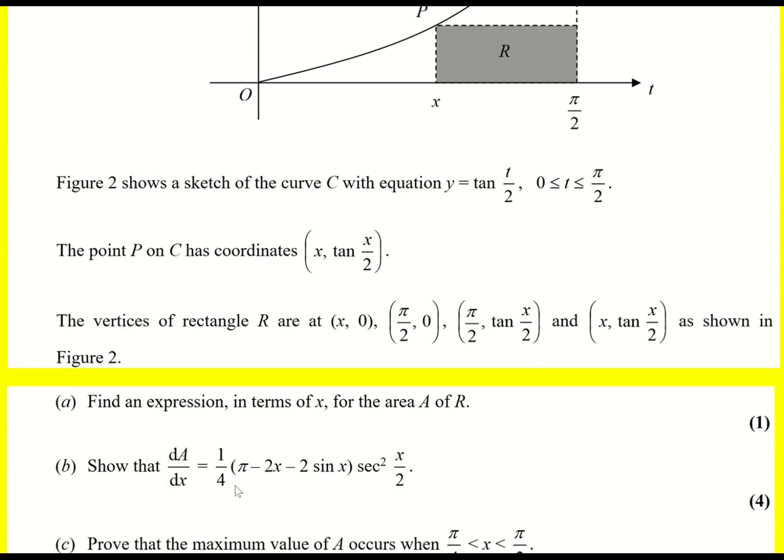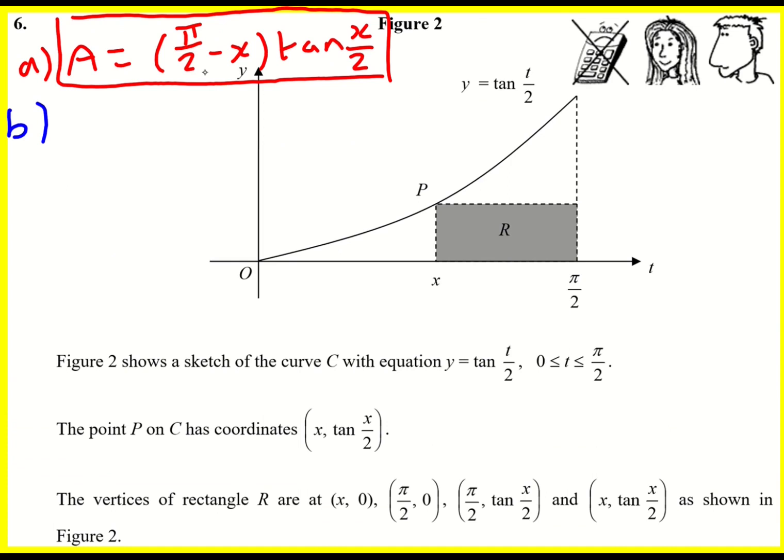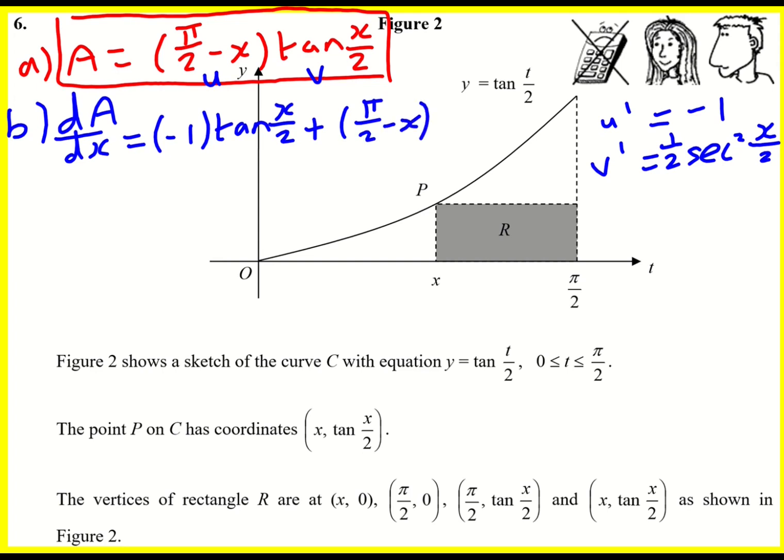In part B, we're asked to differentiate, and note there's a sec squared that's been taken out. So let's see if we can do this. We're going to use the product rule. We've got u and v. u dash will be minus 1. And v dash, well when we differentiate tan x, we get sec squared. So it's going to be sec squared x over 2. But using the chain rule, the chain rule will also bring a half out.